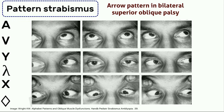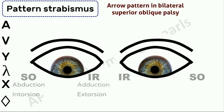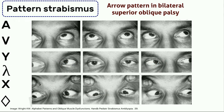Another V pattern subtype is the Arrow pattern, where convergence largely occurs between primary position and midline downgaze. The presence of an arrow pattern and extorsion in downgaze is virtually diagnostic for bilateral superior oblique palsy. When both the superior oblique and inferior rectus act together, the abduction of the superior oblique neutralizes the adduction of the inferior rectus, and the intorsion of the superior oblique neutralizes the extorsion of the inferior rectus, so the eye looks straight down. When the superior oblique is weak, the inferior rectus produces unrestricted adduction and extorsion. When this occurs bilaterally, the typical Arrow pattern is produced.